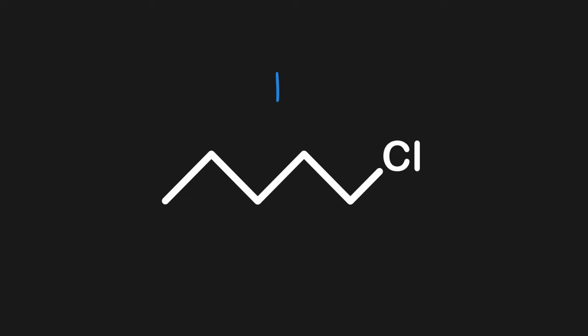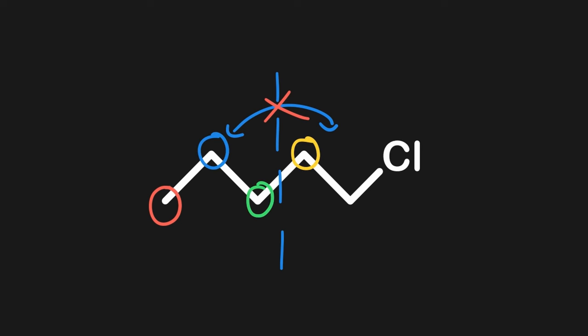Now let's look at a different molecule, specifically chloropentane. For this molecule, we will only need to draw a vertical symmetry line, since it's linear and unbranched. When we draw this line, we can see that this molecule is not mirrored across it, and therefore all the hydrogens here will be unique. There are a total of five unique hydrogens, and as such, we'll have a total of five distinct signals on its NMR spectrum.